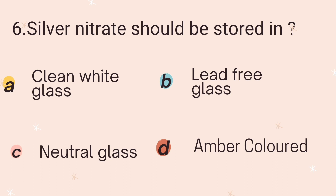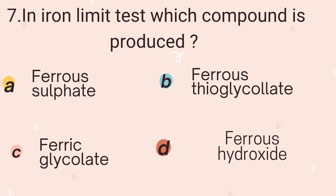Sixth question: Silver nitrate should be stored in which type of container? Option A is clean white glass bottle, Option B is lead-free glass bottle, Option C is neutral glass bottle, and Option D is amber colored bottle. Silver nitrate is very sensitive to sunlight — if exposed, it converts to silver oxide, which is dark brown in color. Therefore, it must be stored in an amber colored bottle.